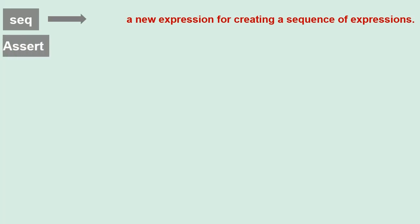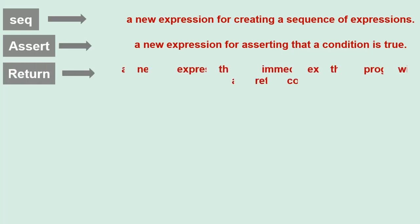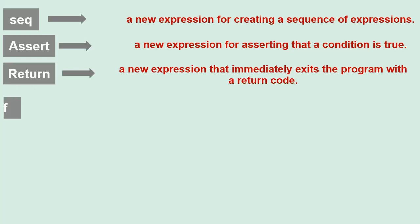Seq — a new expression for creating a sequence of expressions. Assert — a new expression for asserting that a condition is true. Return — exits the program with a return code. And single-branch if statements.